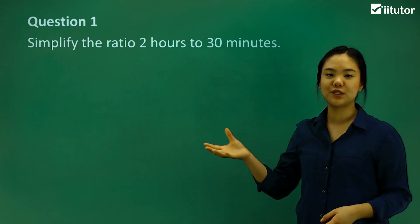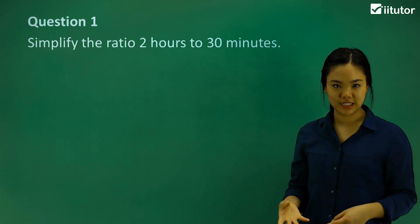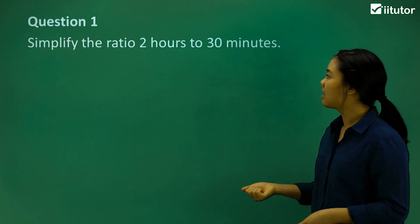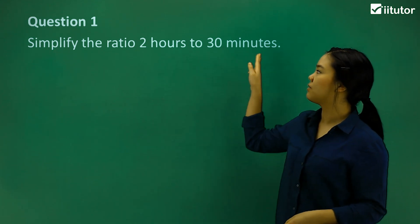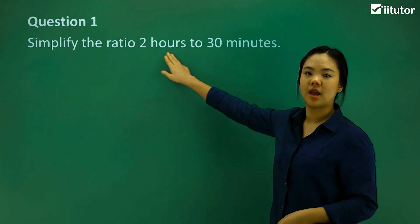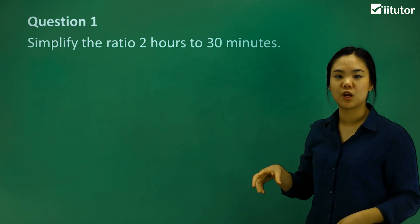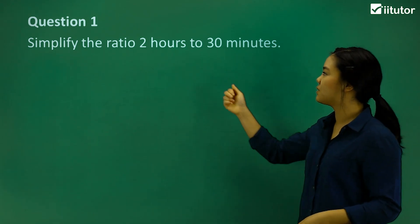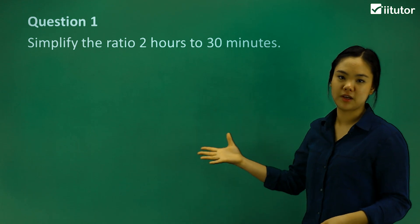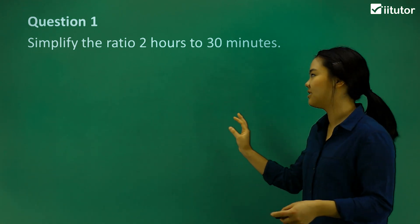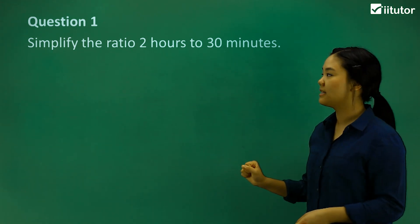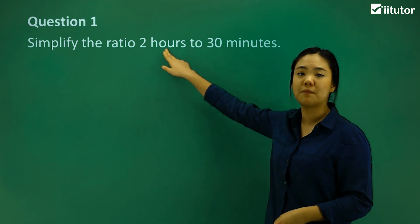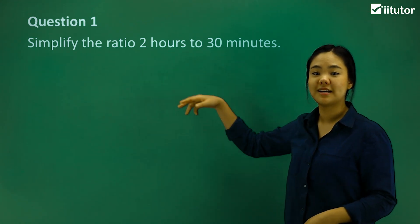The first thing you want to do is make the units the same. So do we do minutes or hours? I say we do minutes because then we get whole numbers. If we did hours, it would be 2 hours to 0.5, and then you're dealing with decimals and that's not fun. So what we can do is 2 times how many minutes in an hour? 60.